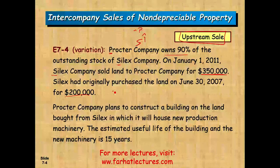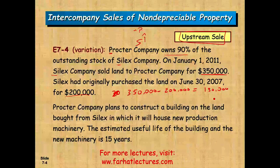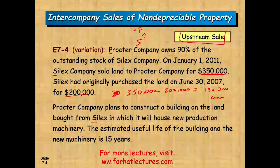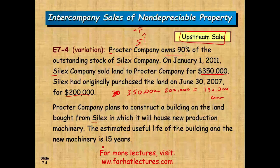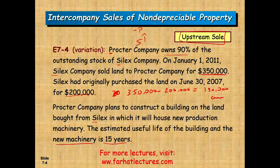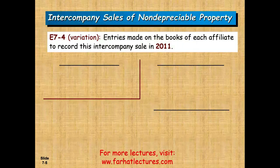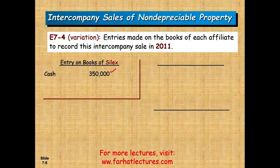Let's think about it: the subsidiary sold the land for $350,000 and the cost was $200,000, so the subsidiary books a gain of $150,000. The subsidiary records: debit cash $350,000, credit land $200,000, credit gain on sale $150,000. The parent company bought the land at $350,000, so they record: debit land $350,000, credit cash $350,000.